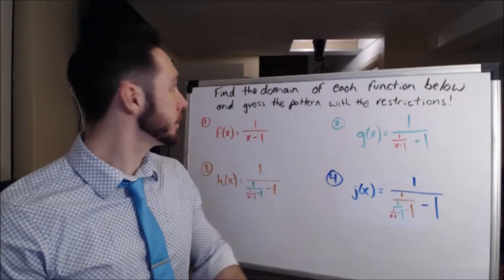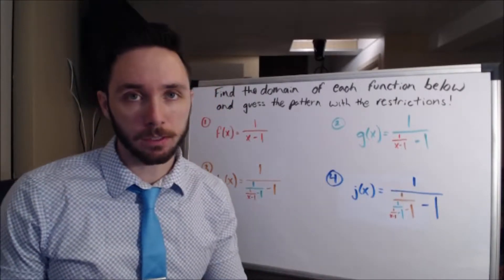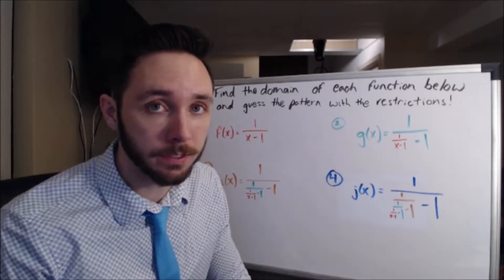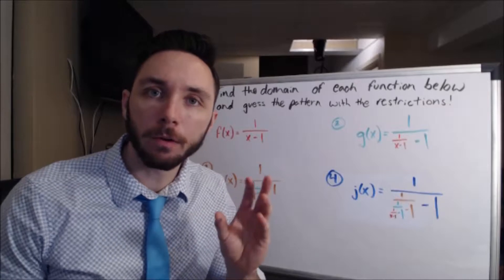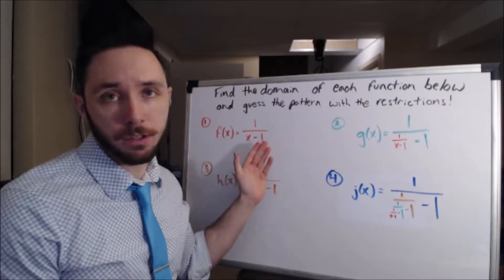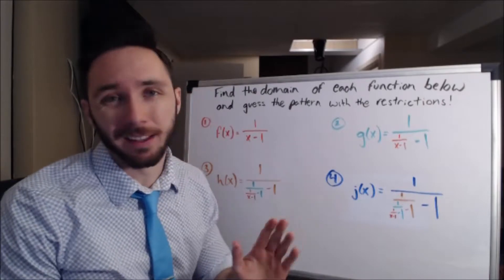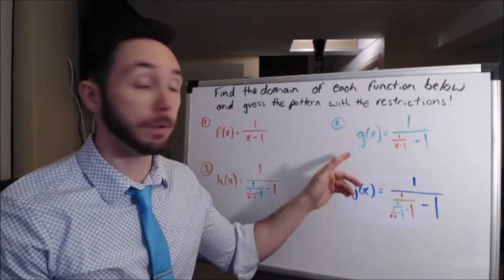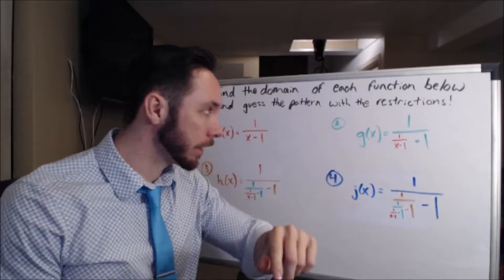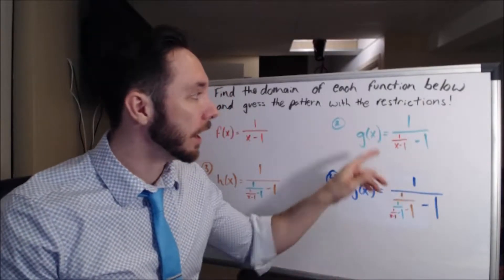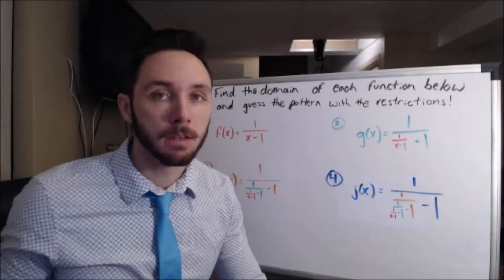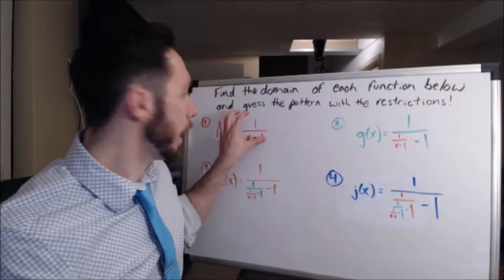Find the domain of each function below and guess the pattern with the restriction. Here you see a total of four different functions and they all have this kind of cool related effect with one another. If we look at f(x), it's just 1 over x minus 1 — nothing too special there. But when we look at g(x), notice the color coding: it's going to be 1 over x minus 1, minus 1.